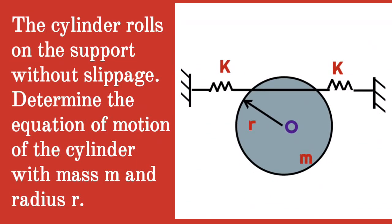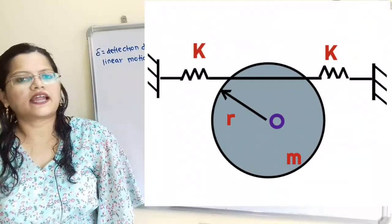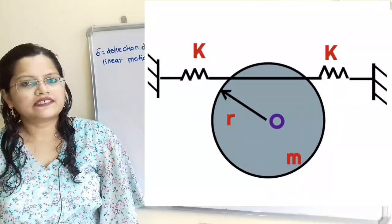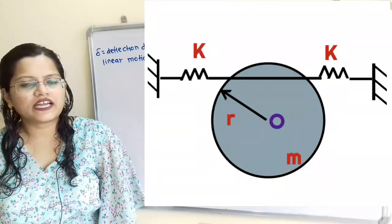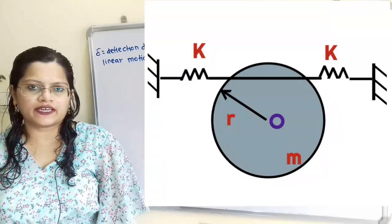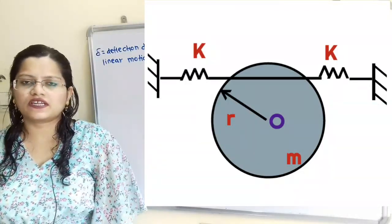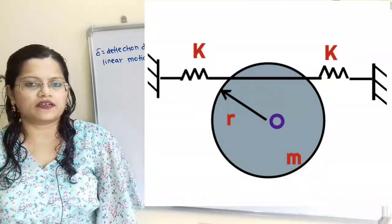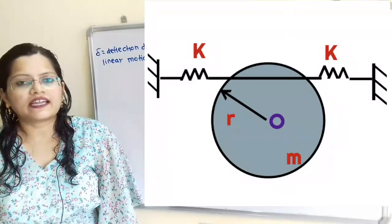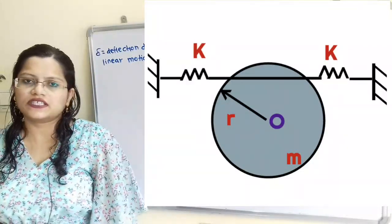Given question: the cylinder rolls on the support without slippage. Determine the equation of motion for the cylinder with mass M and radius R. A cylinder with mass M and radius R rolls on a fixed support and is connected to two springs as shown in the diagram. We have to find the natural frequency. We are going to solve this problem using the energy method, finding kinetic energy as well as potential energy in the system.